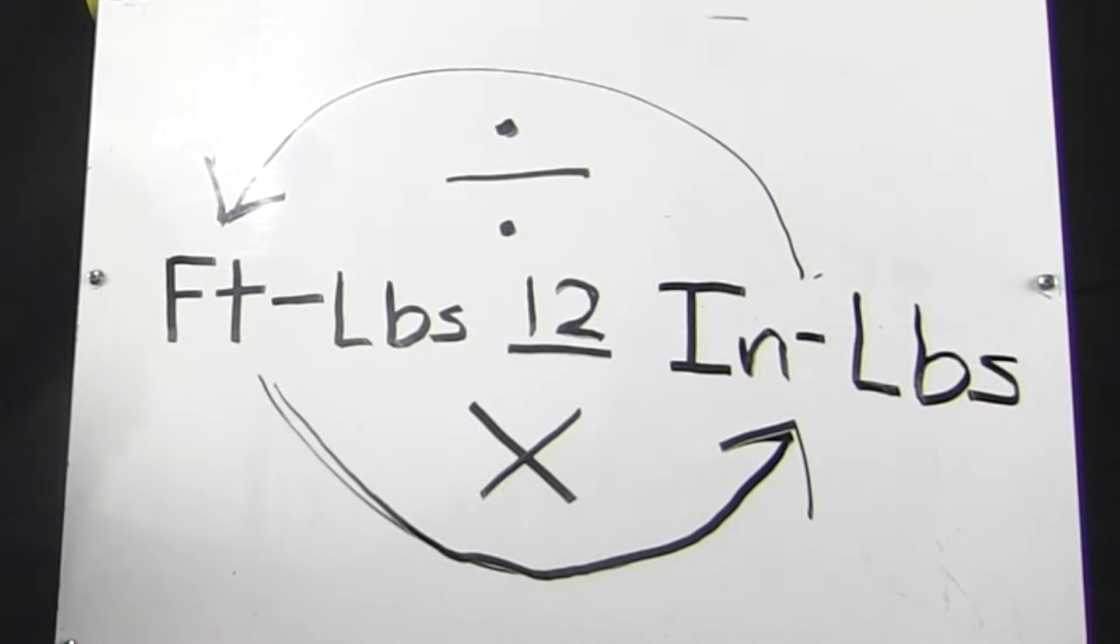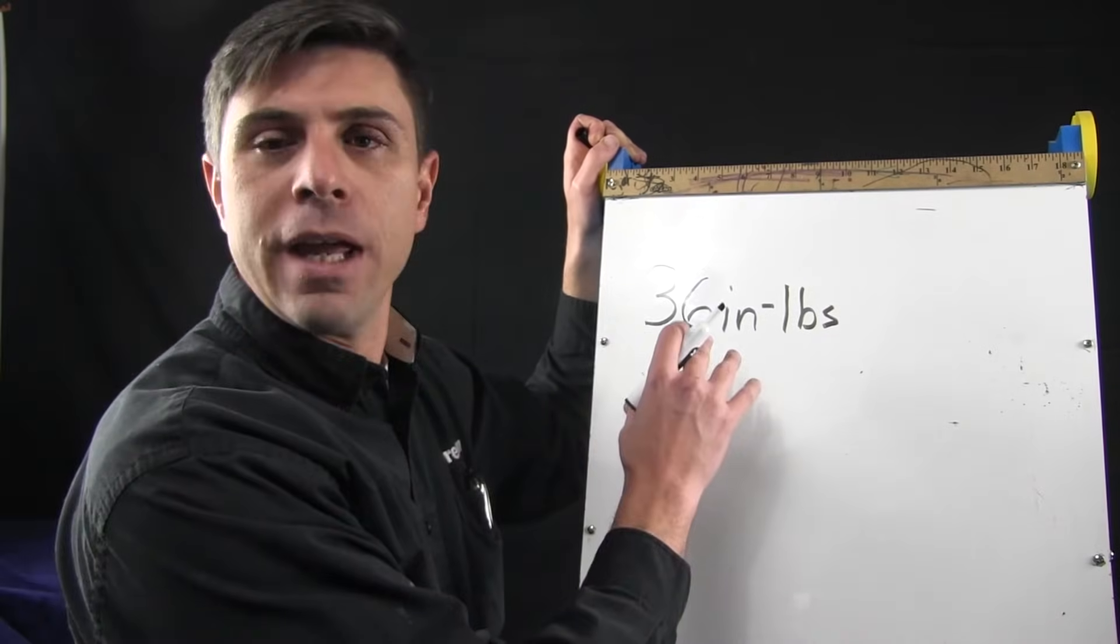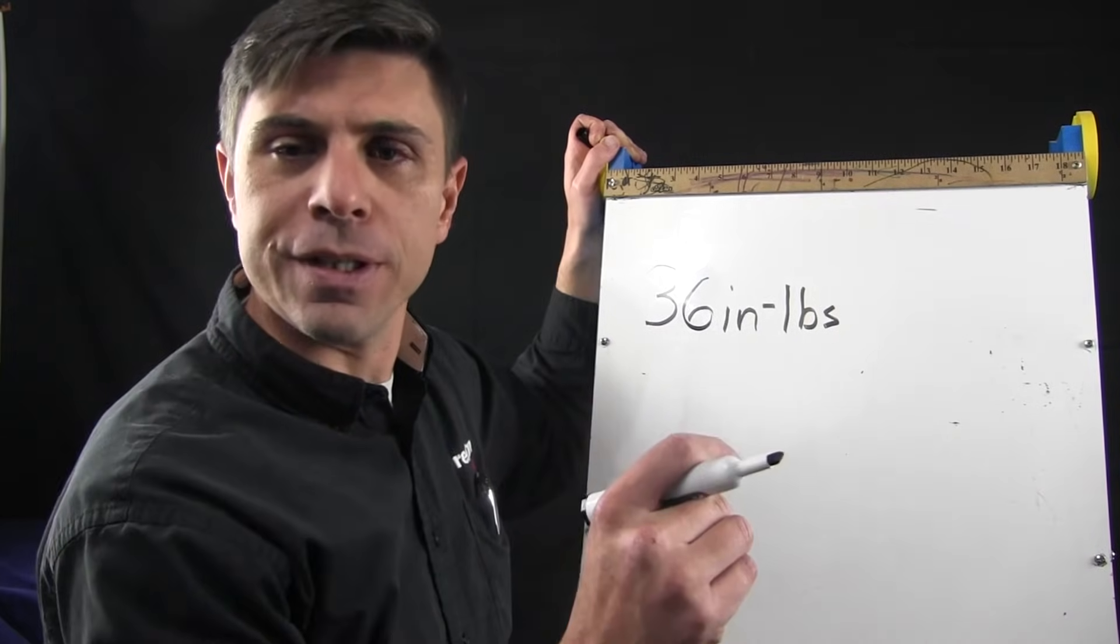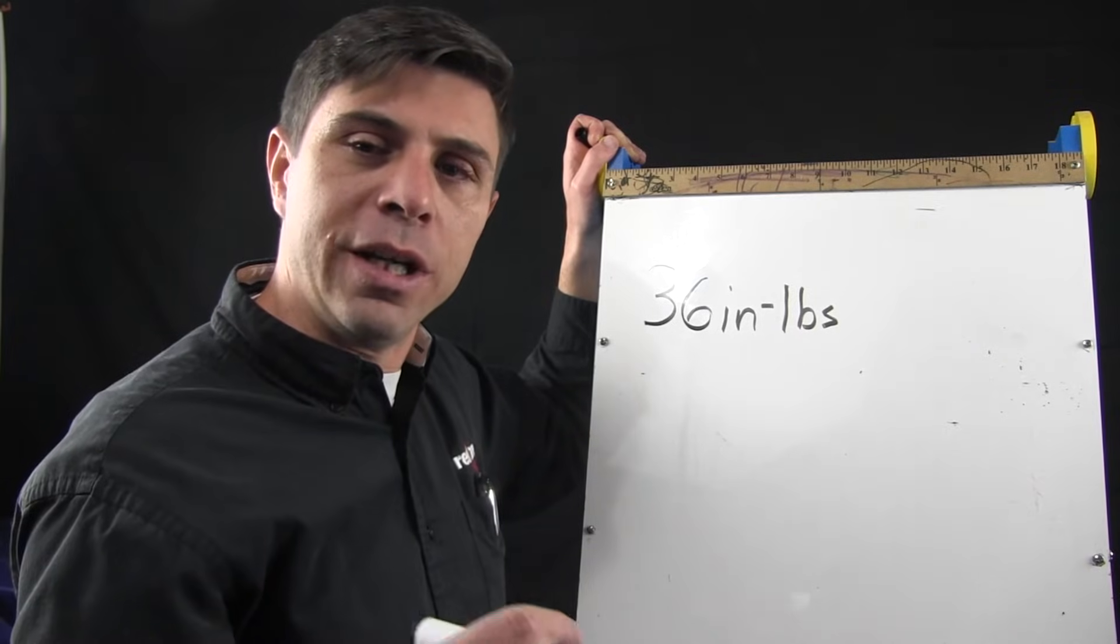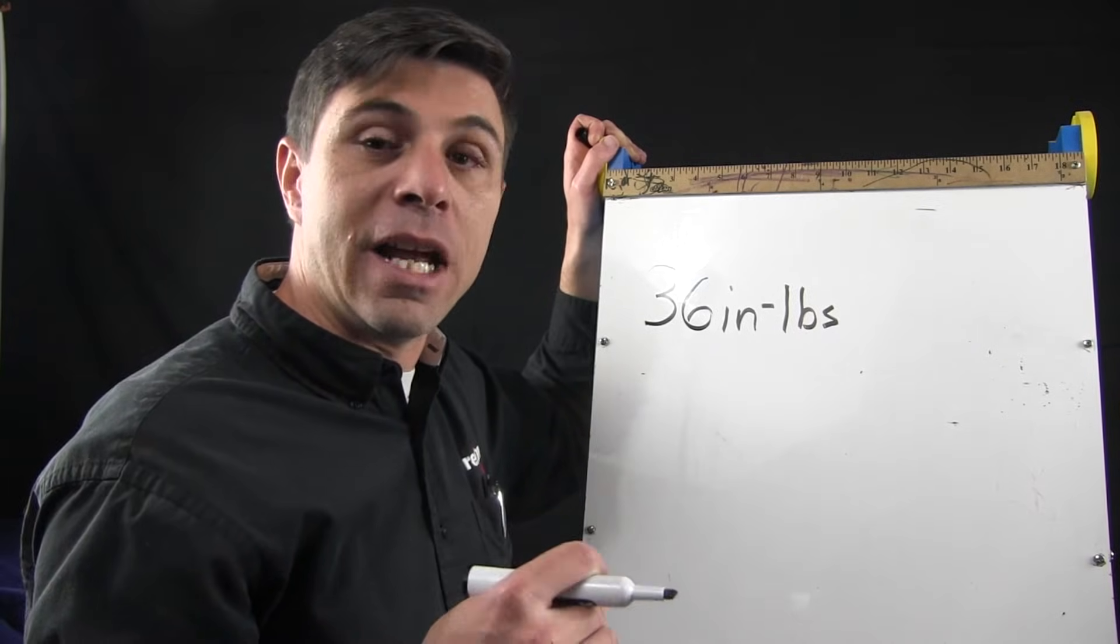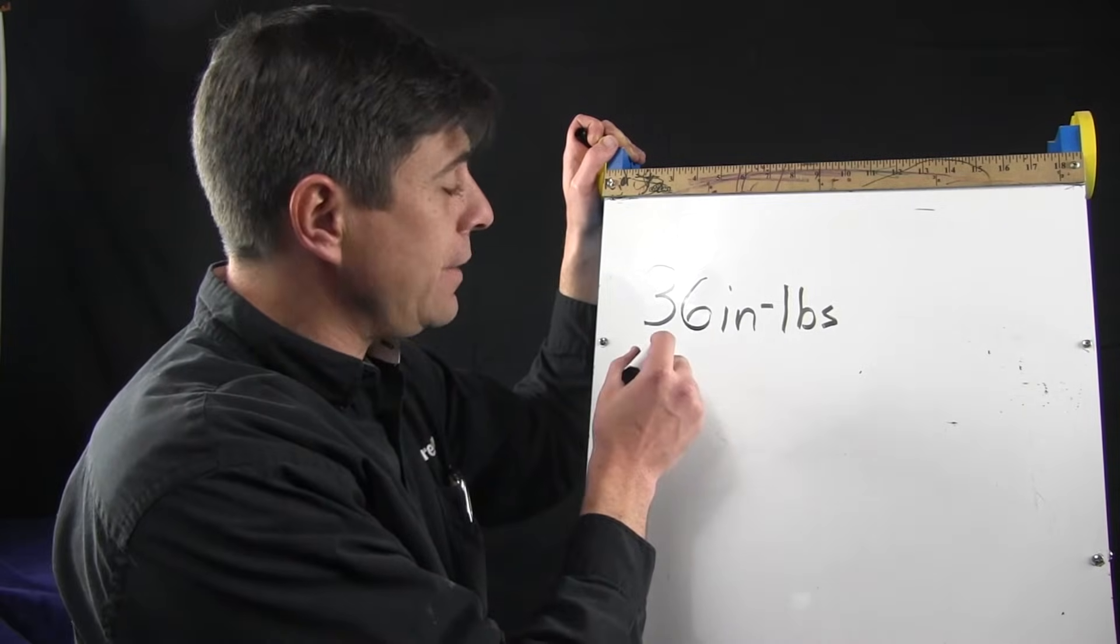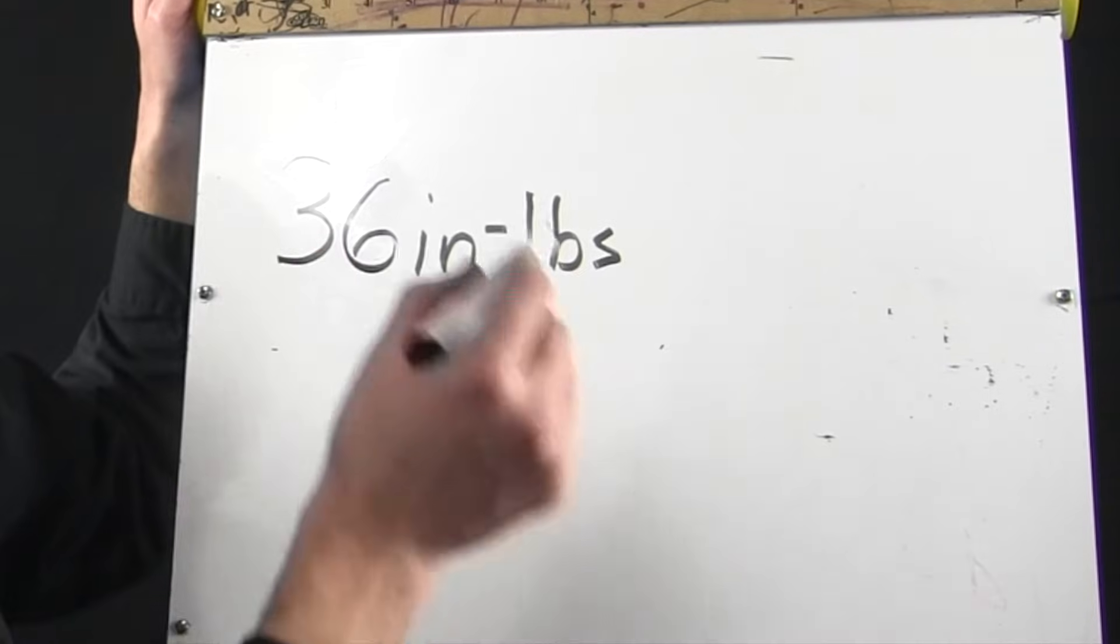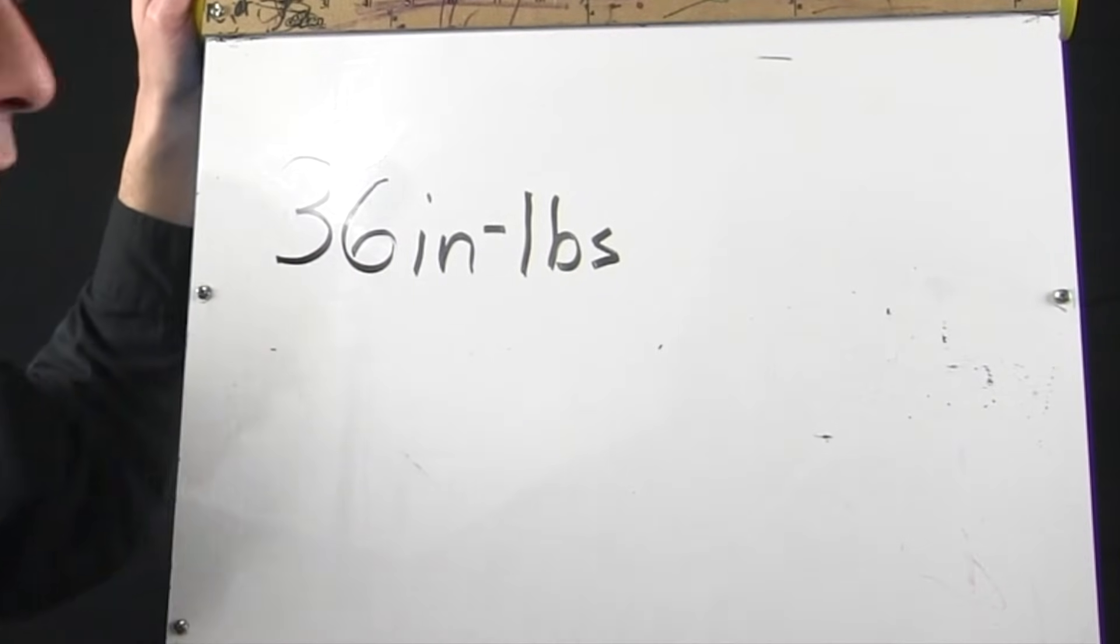Now let's take a look at a couple equations. Let's say we have a torque wrench that's set at 36 inch-pounds, but the spec calls out that you need 2 foot-pounds. Would 36 inch-pounds be more or under what you need? Let's figure that out.